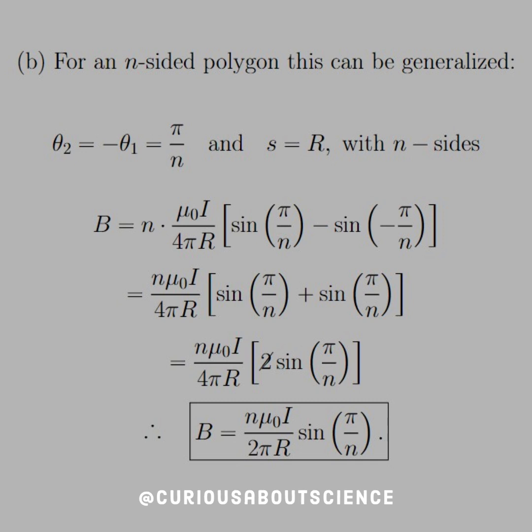Now, you might notice that that 2 pi R looks familiar to the circumference of a sphere, or a circle, rather. And we'll see in the next part why that comes to fruition.